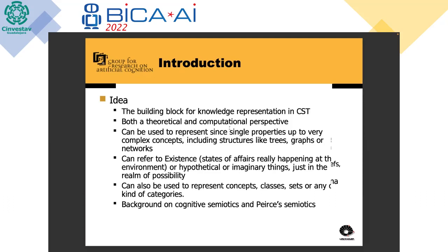One interesting particularity of our computational idea is that it can refer to existence — the states of affairs really happening in the environment, whatever is around us. But computational ideas can also refer to hypothetical or imaginary things that exist only in the realm of possibility. This is quite important because it is not common to have that in other cognitive architectures. Computational ideas can also represent concepts, classes, sets, or any other kinds of categories.